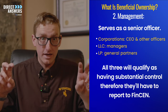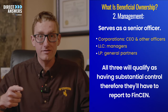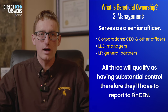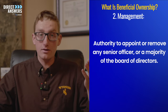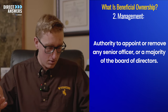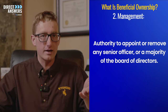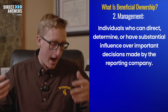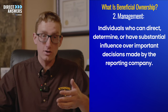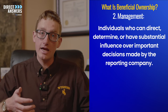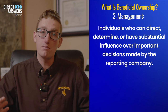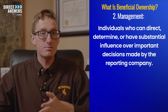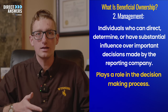And because they have substantial control, they're going to need to report their information to FinCEN. Because this substantial control is broad, it includes a few other things as well. The next is somebody who has the authority to appoint or remove a senior officer or a majority of the board of directors of the company. Substantial control can also apply to individuals who can direct, determine, or have substantial influence over important decisions made by the reporting company — meaning this person plays a role in the decision-making process of the company.